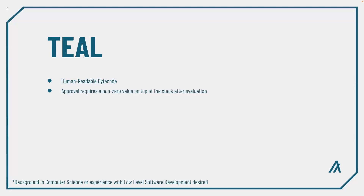A TEAL smart contract will only be successful if it ends execution with a single non-zero unsigned integer on the stack. Ending evaluation with multiple values on the stack, a zero, or a byte string will result in a failure, and the AVM will reject the transaction without charging the sender a fee.